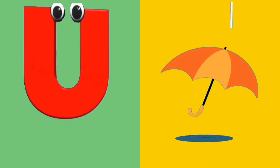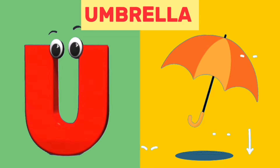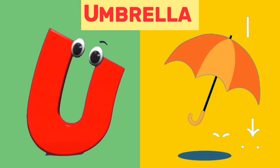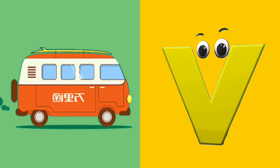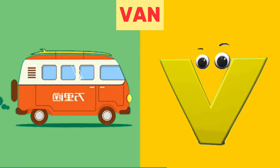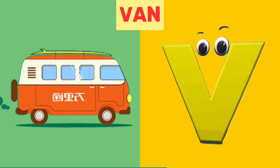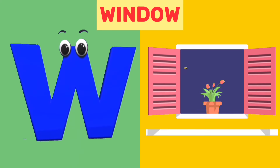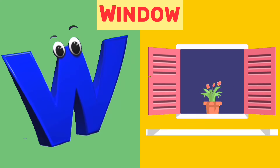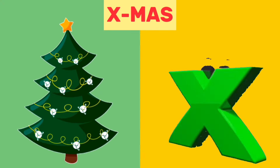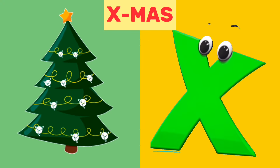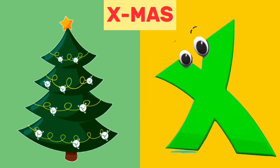U is for Umbrella. U, U. Umbrella. V is for Van. V, V. Van. W is for Window. W, W. Window. X is for Xmas. X, X. Xmas.